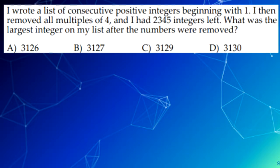The next question is, I wrote a list of consecutive positive integers beginning with 1. Then I removed all multiples of 4, and I had 2,345 integers left. What was the largest integer on my list after the numbers were removed? For this question, for every three numbers left, one multiple of 4 was removed.